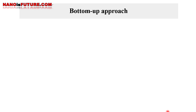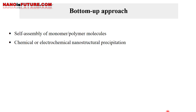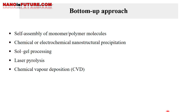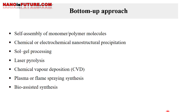The bottom-up approach involves the coalescence or assembling of atoms and molecules to generate a diverse range of nanoparticles. Examples of the bottom-up approach include self-assembly of monomer and polymer molecules, chemical or electrochemical nanostructural precipitation, sol-gel processing, laser pyrolysis, chemical vapor deposition (CVD), plasma or flame spraying synthesis, and bio-assisted synthesis.